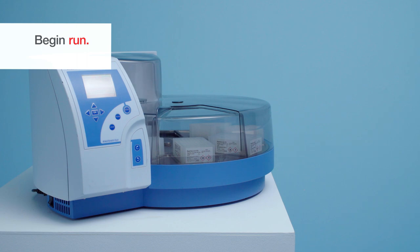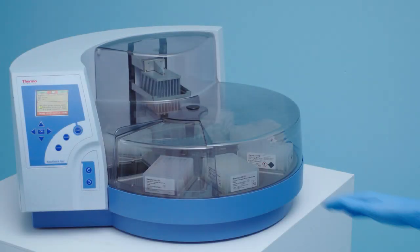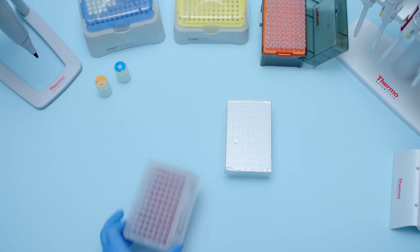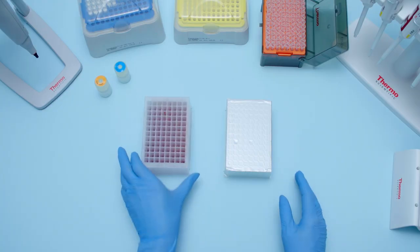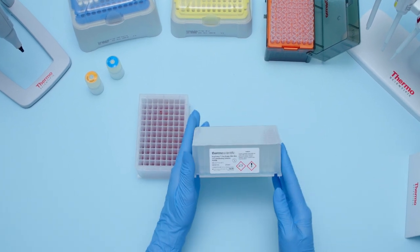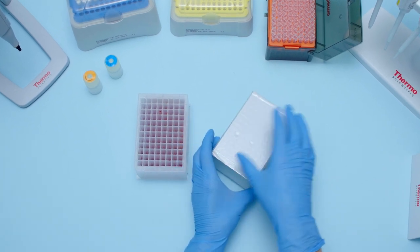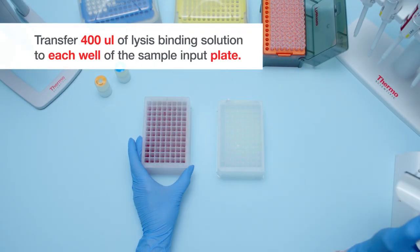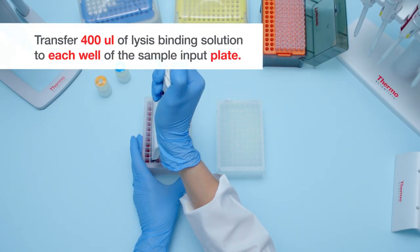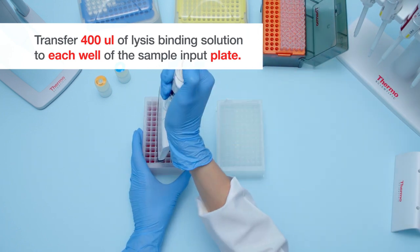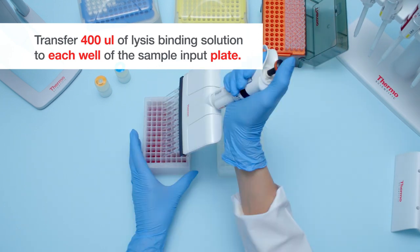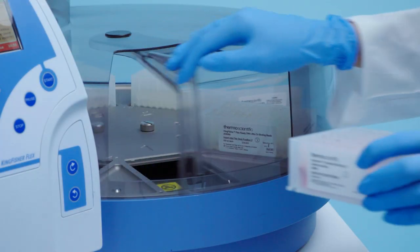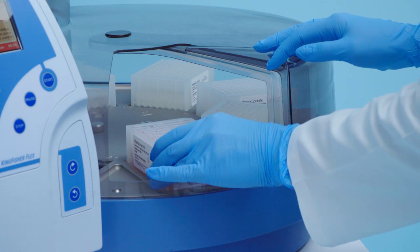About 20 minutes after the run starts, the PK digest step is complete and lysis solution must be transferred to prepare the sample for the next step. Use a 12-well, multi-channel pipetter to transfer 400 microliters of lysis binding solution from the lysis binding solution plate to the digested sample input plate in deck position 1. Return sample input plate to deck position 1 on the Flex instrument and continue the run.